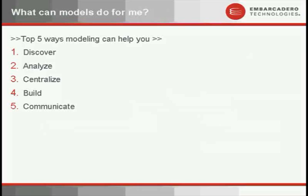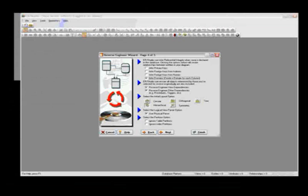So let's get into the crux of what we're talking about today. We're targeting a DBA audience with this presentation, and we want to talk about the top five ways modeling can help you. The first is Infer Domains — this is how we're going to look at a database schema and analyze the specific data inconsistencies that may have arisen over the years of development on this particular database.